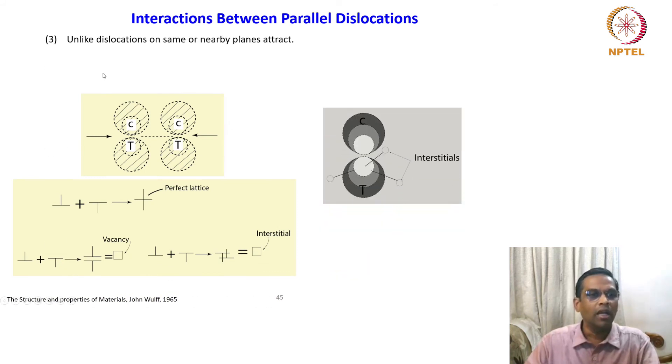Unlike dislocations on the same or nearby planes attract. This is quite obvious. This schematic should be wrong because the unlike means that T should be up and C should be down, so there is a correction here. This should compare with this symbolism here - this is positive dislocation, this is negative dislocation. So it should be rotated 180 degrees. There is a correction here. If they combine together, then it forms a perfect lattice.